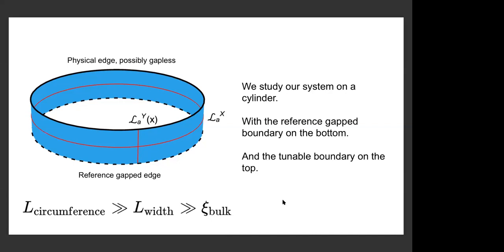We're going to create this one-dimensional system by taking the system on a cylinder. The cylinder has two edges; on the bottom edge we put our reference gapped boundary condition, which is fixed for all time. On the other side, we have the physical edge where we're allowed to tune parameters — this could be a gapless boundary, a critical point, or a multicritical point between different boundary conditions. We choose a special geometry where the circumference is much longer than the width, and the width is still larger than the bulk correlation length, so these edges are essentially decoupled. We consider the circumference as our one-dimensional direction.